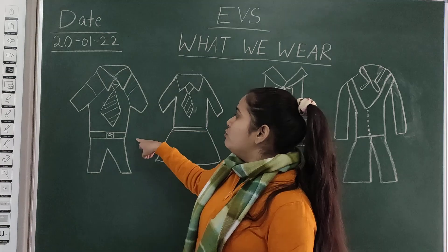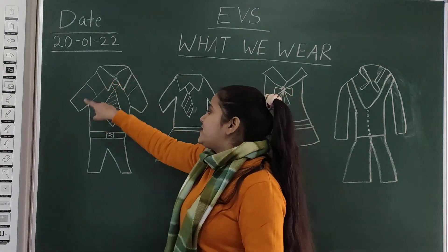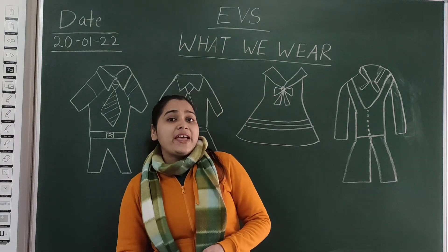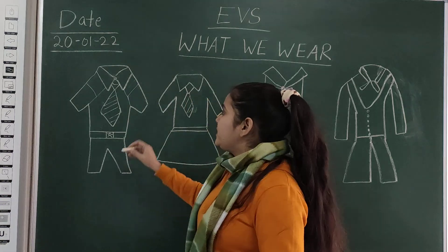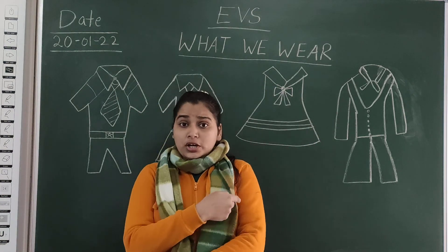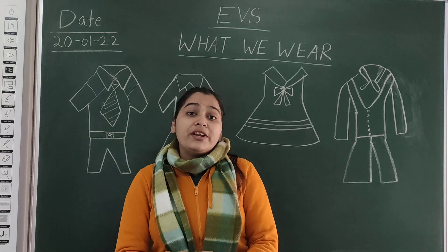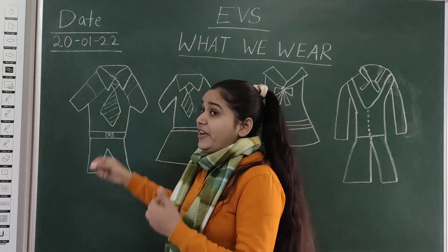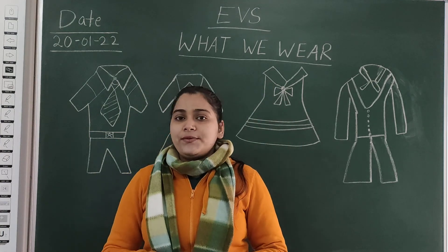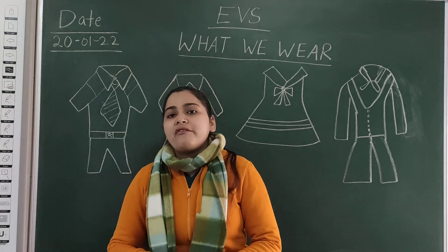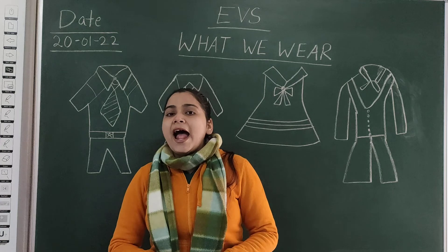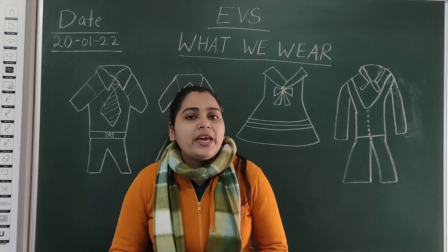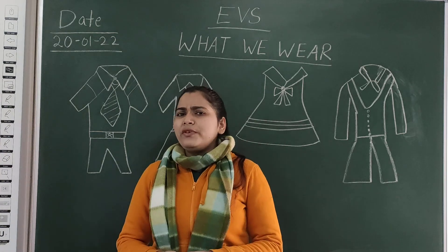I have drawn two school dresses — one is for a boy and one is for a girl. In school, boys wear a shirt — half shirt or full shirt. Full shirt in winters and half shirt in summers. Then we wear a tie, or a scarf. And we have trousers, and a belt also, which we tie on the waist.